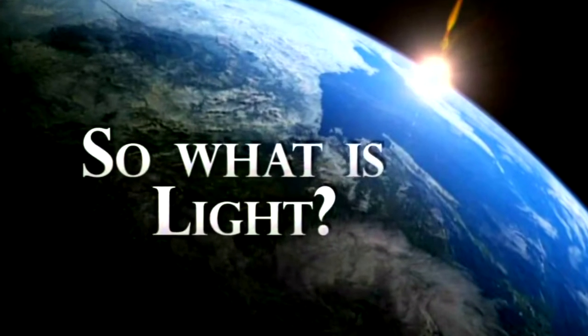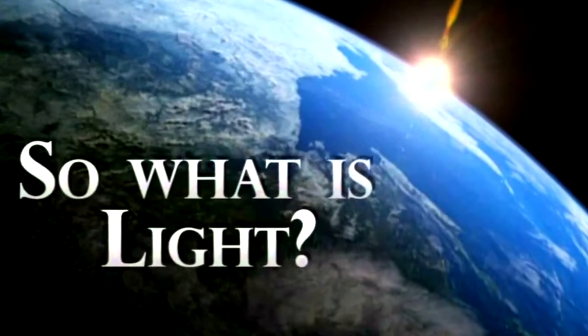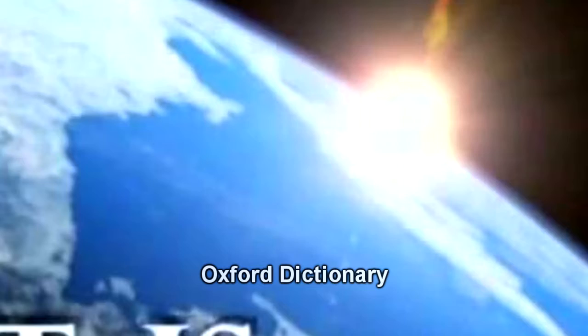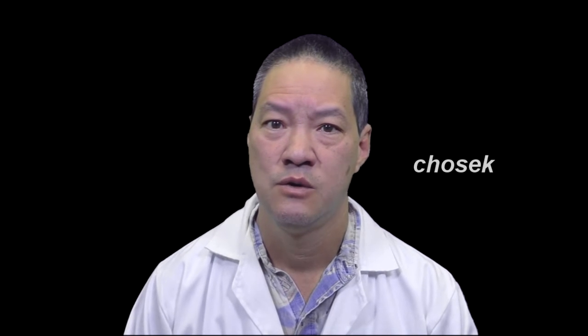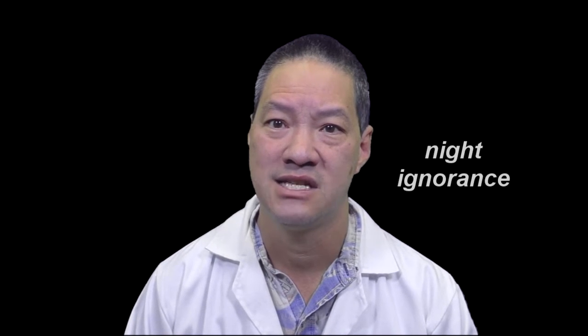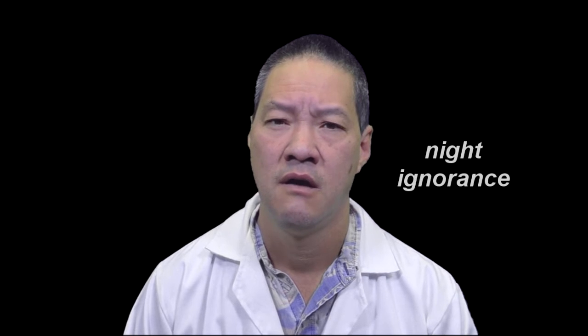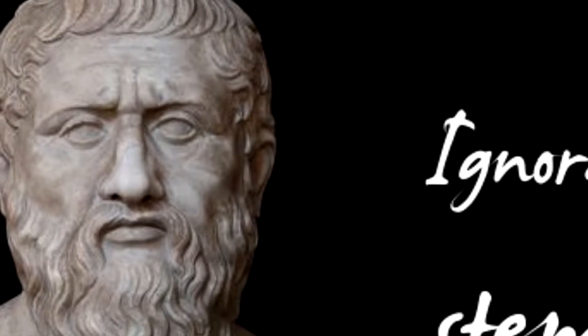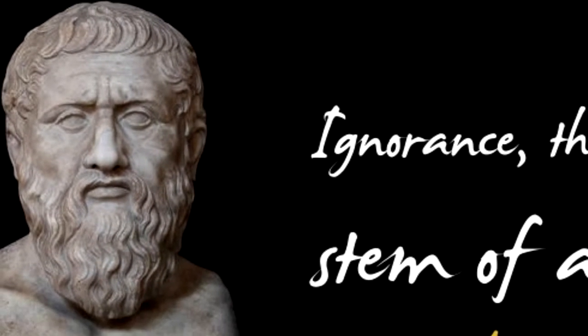And what is light? Light is defined as the natural agent that stimulates sight and makes things visible. But what is darkness? Darkness is the Hebrew word choshek, which means darkness, but also means night and ignorance. For darkness is the absence of light, as ignorance is the absence of knowledge, and night is the absence of day.